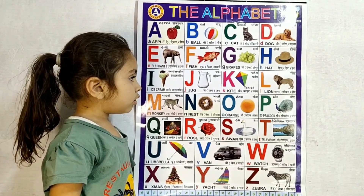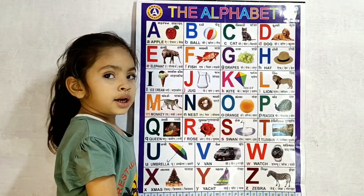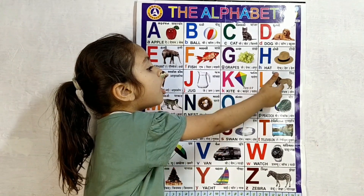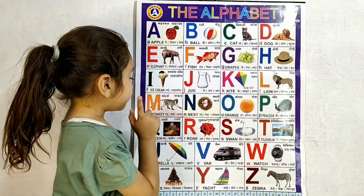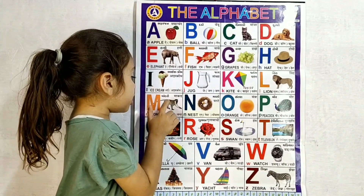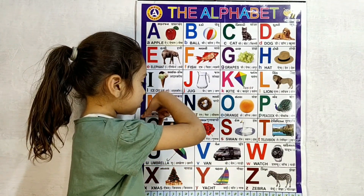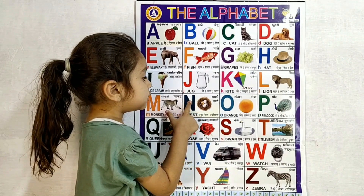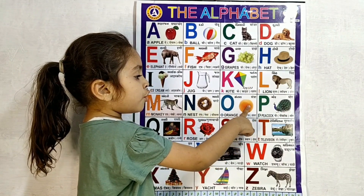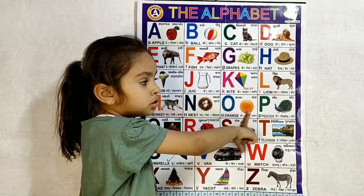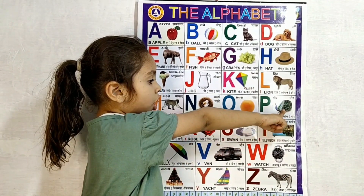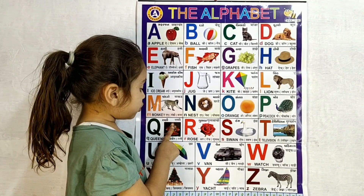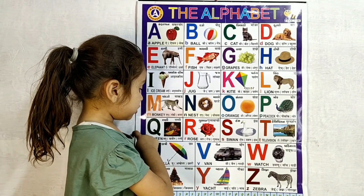K for kite, L for lion, M for monkey, O for orange, P for peacock, Q for queen.